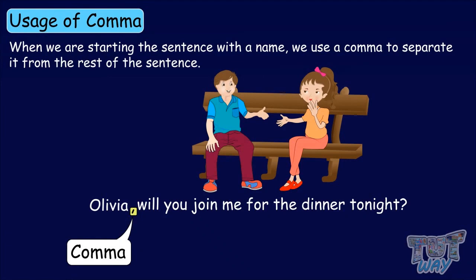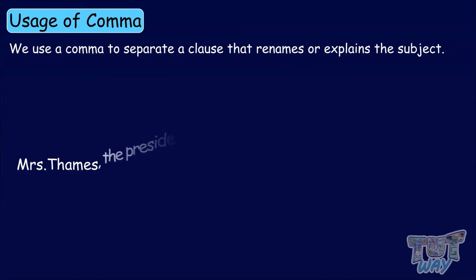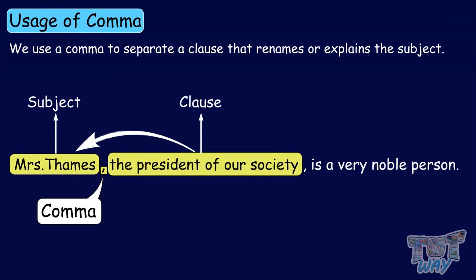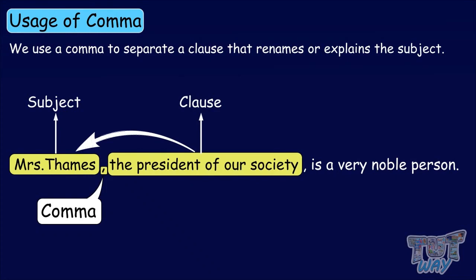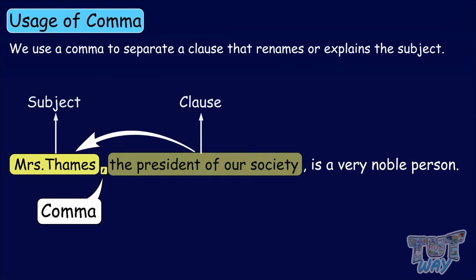Now let's learn more about the usage of comma. We use a comma to separate a clause that explains the subject. For example: Miss Thames, the president of our society, is a very noble person. Miss Thames is the subject of the sentence, and the clause that explains the subject — the president of our society — is separated with a comma.